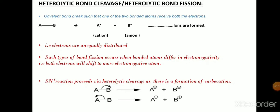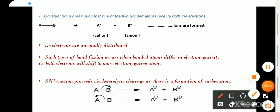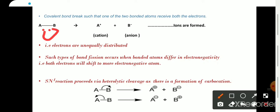Second is heterolytic bond cleavage. In heterolytic bond cleavage, the covalent bond breaks in such a pattern that both electrons shift towards one of the bonded atoms. Hence there is a formation of ions — a positively charged ion called a cation and a negatively charged ion called an anion. Electrons are unequally distributed. Such type of bond fission occurs when both bonded atoms differ in electronegativity — both electrons will transfer to the atom which has more electronegativity.